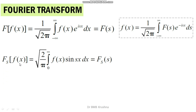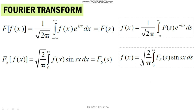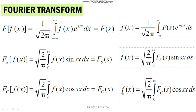The Fourier sine transform of f(x) is: Fₛ(s) = √(2/π) ∫₀^∞ f(x) sin(sx) dx. The inverse Fourier sine transform is: f(x) = √(2/π) ∫₀^∞ Fₛ(s) sin(sx) ds. The Fourier cosine transform of f(x) is: F_c(s) = √(2/π) ∫₀^∞ f(x) cos(sx) dx, and its inverse is f(x) = √(2/π) ∫₀^∞ F_c(s) cos(sx) ds.